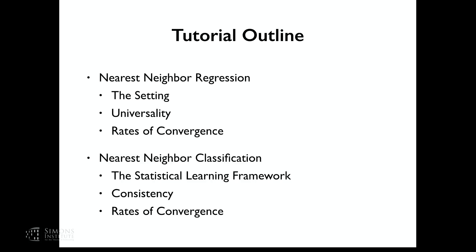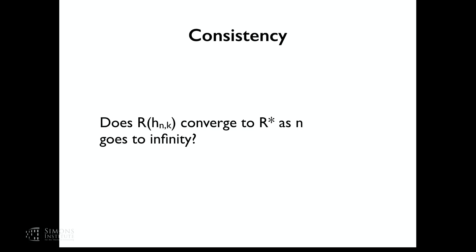Now with our framework set up, let's look at what is possible. The first question is: does r(h_n,k) — the risk of the k-nearest neighbor classifier with n training points — converge to r* as n grows? Let's start with one nearest neighbor, assuming continuous and absolutely continuous measure.